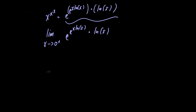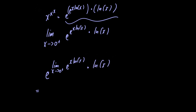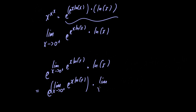What we can do is rewrite this limit as e raised to the limit as x approaches zero from the right of e raised to x multiplied by the natural logarithm of x, multiplied by the limit as x approaches zero from the right of the natural logarithm of x.